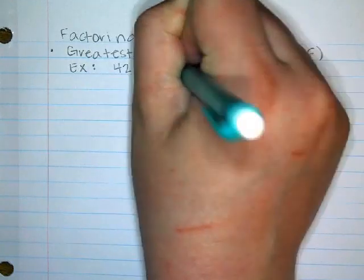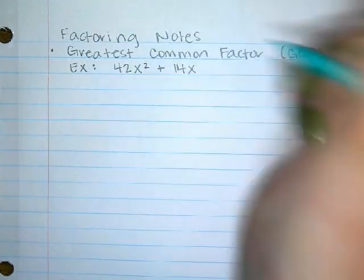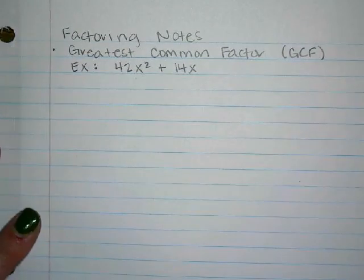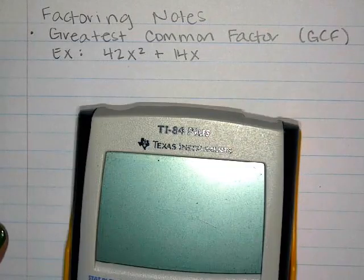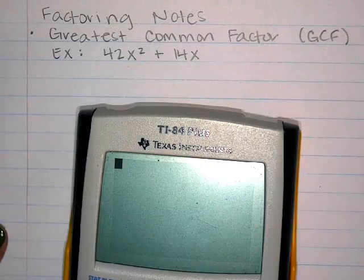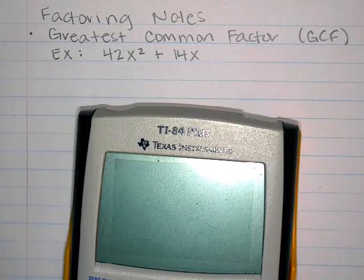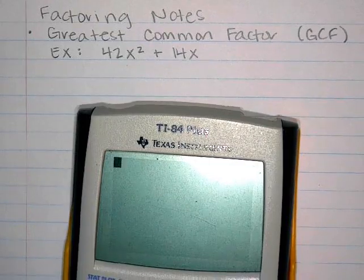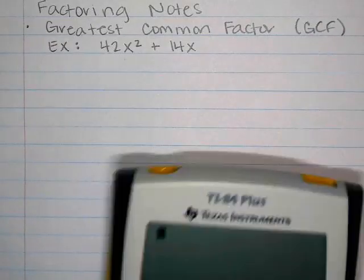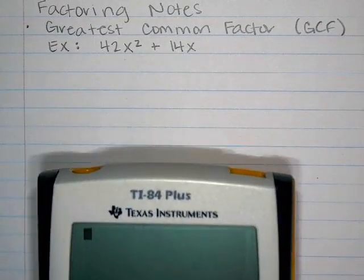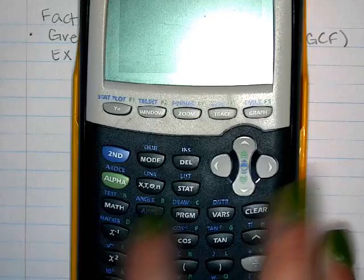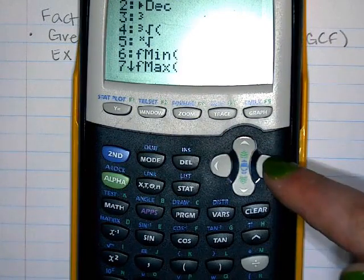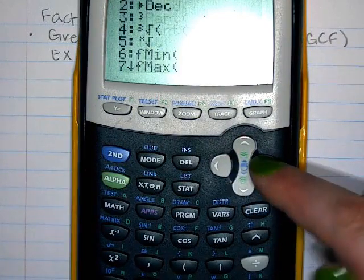For example, if I was to factor 42x squared plus 14x, some people look at this and know exactly what's in common, and some people don't. I want to make sure you can do this. Your calculators actually have a neat little trick for finding the GCF. Does anyone know how these calculators can find the GCF?